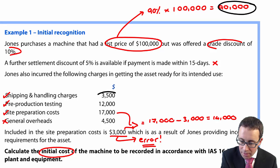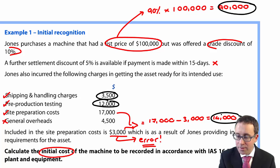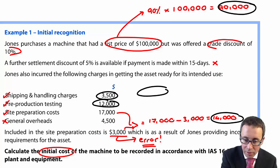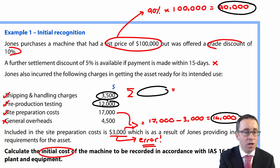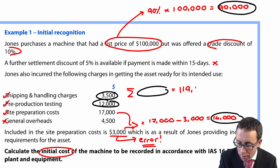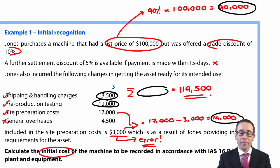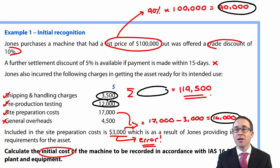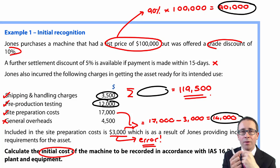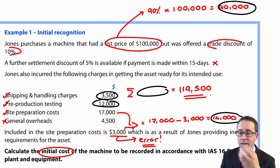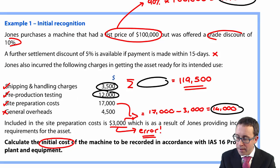So we capitalise $90,000, plus $3,500 shipping, plus $12,000 testing, plus $14,000 site preparation — giving a total of $119,500. That's what we capitalise, and once capitalised we go on to depreciate it. A question like this is a prime example for an objective test question in the exam. Be careful — the question could ask what we do NOT capitalise, which would be $4,500 and $3,000, giving $7,500.